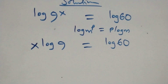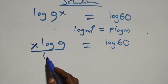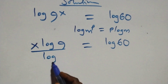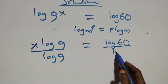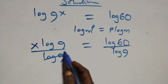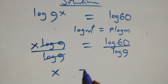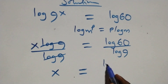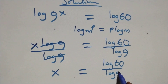The next step: we apply the power rule of logarithm — when we have log n raised to the power p, this is the same as p·log n. So all we have becomes x·log 9 equals log 60. We then divide both sides by log 9, so log 9 cancels and we have x equals log 60 over log 9.